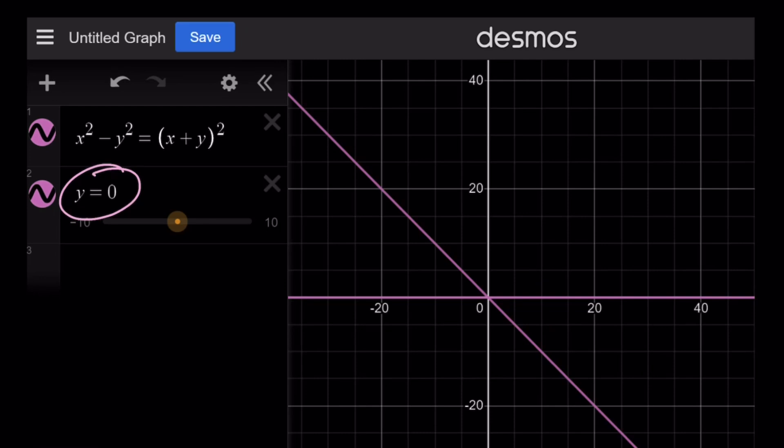But another solution is y equals negative x. As you can see, this line is y equals negative x, and this one is y equals 0, which is the x-axis. And those are going to be all the solutions. Any point on those lines is going to be a solution. Therefore, there are infinitely many solutions to this equation.